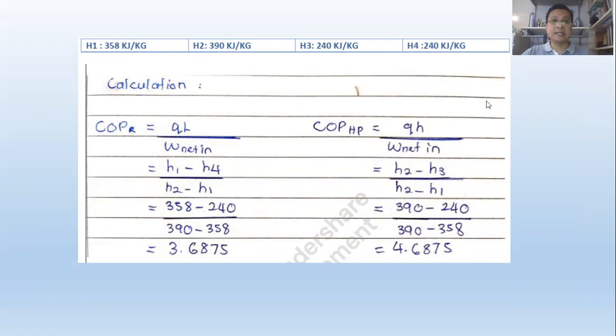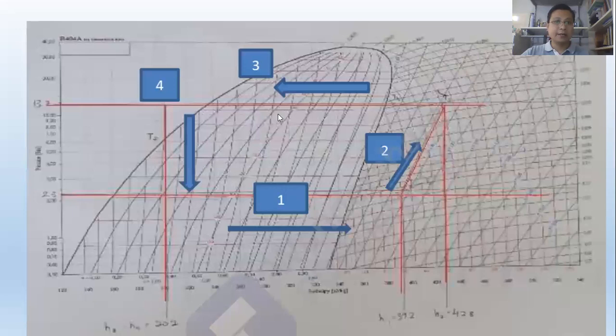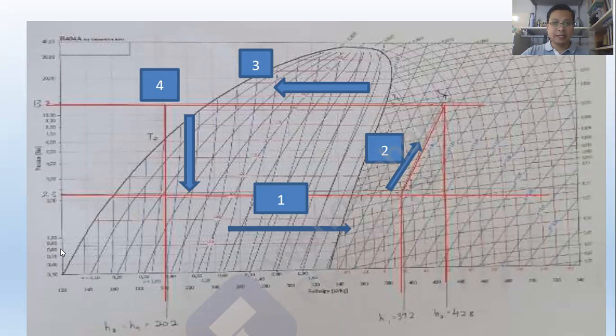In this case, H3 and H4 is constant. We can calculate the COP, both COPR and COPHP. And then we can plot using the pH curve. Which one is the position from the H? H1, H1, H1, and then we go to H2. And then H3 equal to H4. You can see, because H is constant. That's why H3 equal to H4.